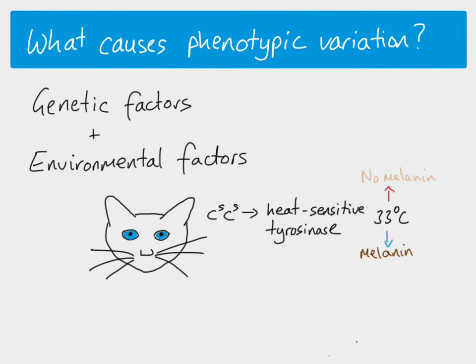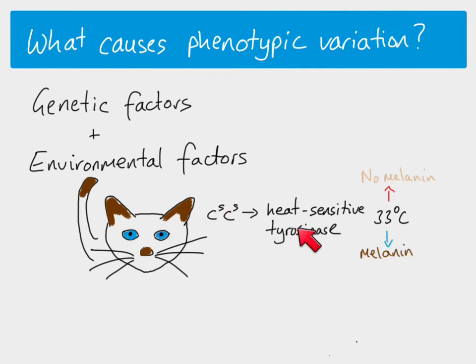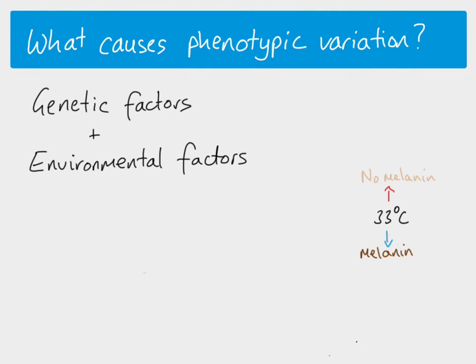The coat color varies in different parts of the body because some areas are warmer than others. The extremities — like the tips of the ears — are cooler than the rest of the body, so melanin is produced there, resulting in the characteristic dark coloring on the ears, nose, and face of Siamese cats. It's the genes causing tyrosinase to be produced, but the environment affects the phenotype.